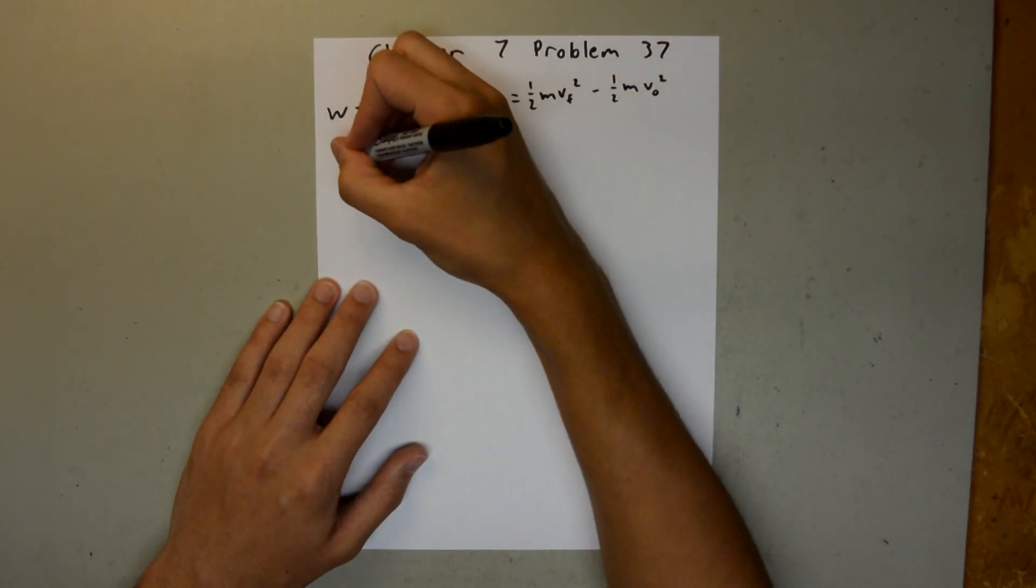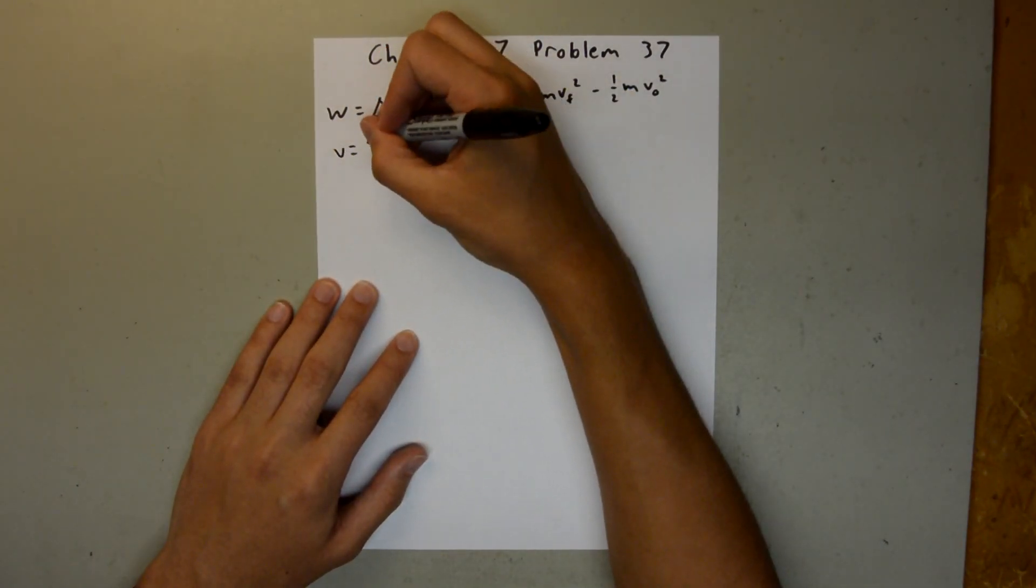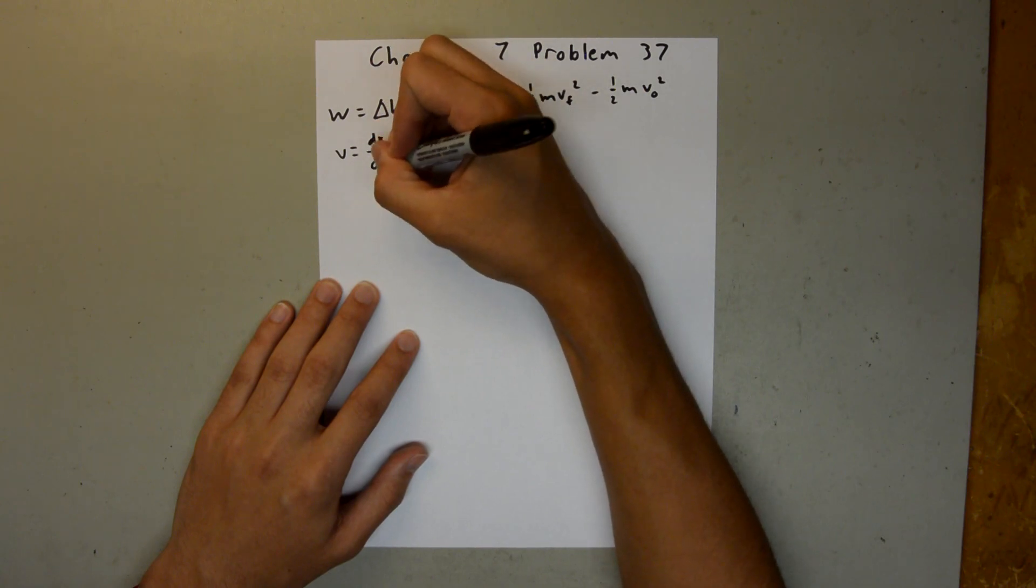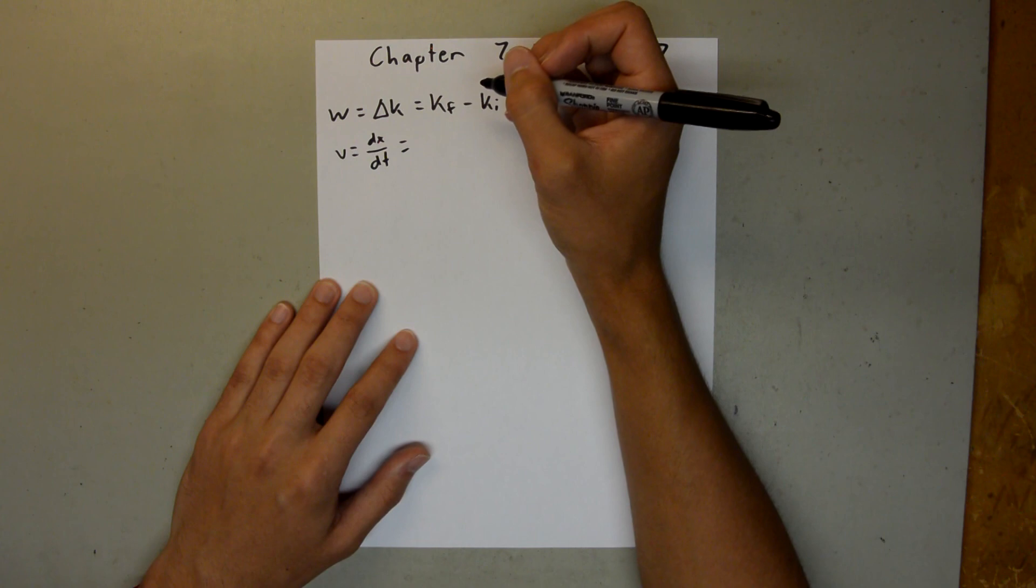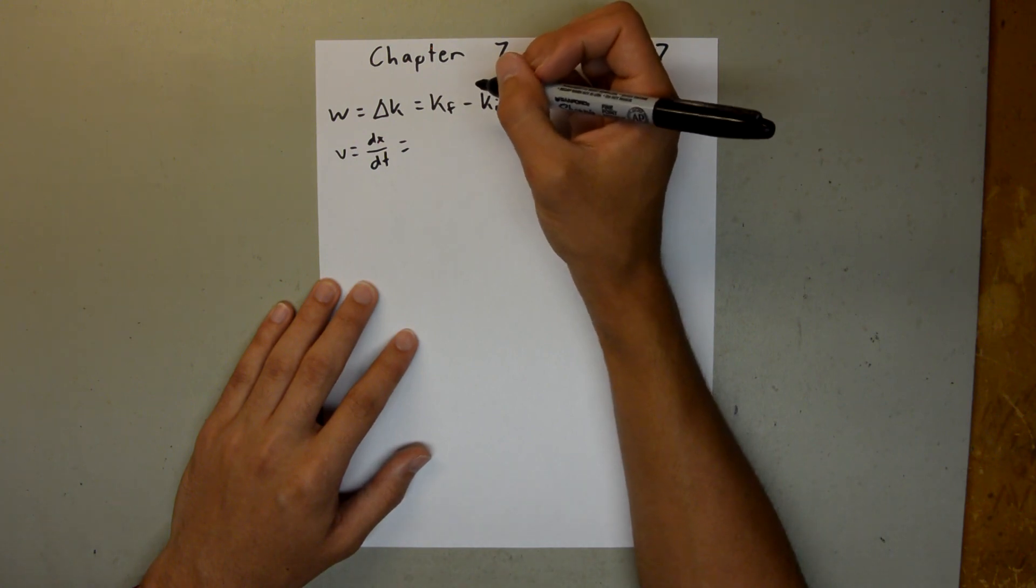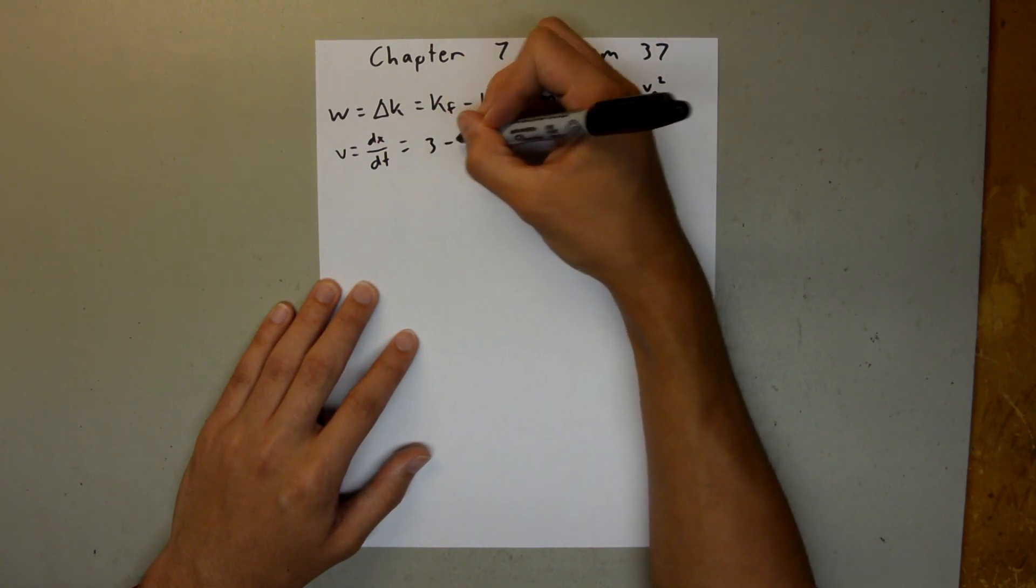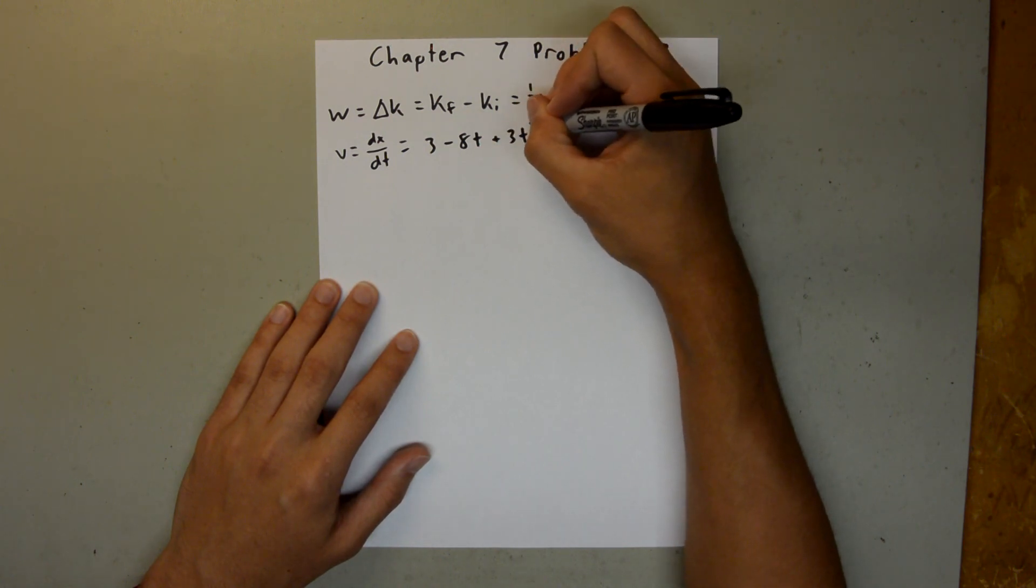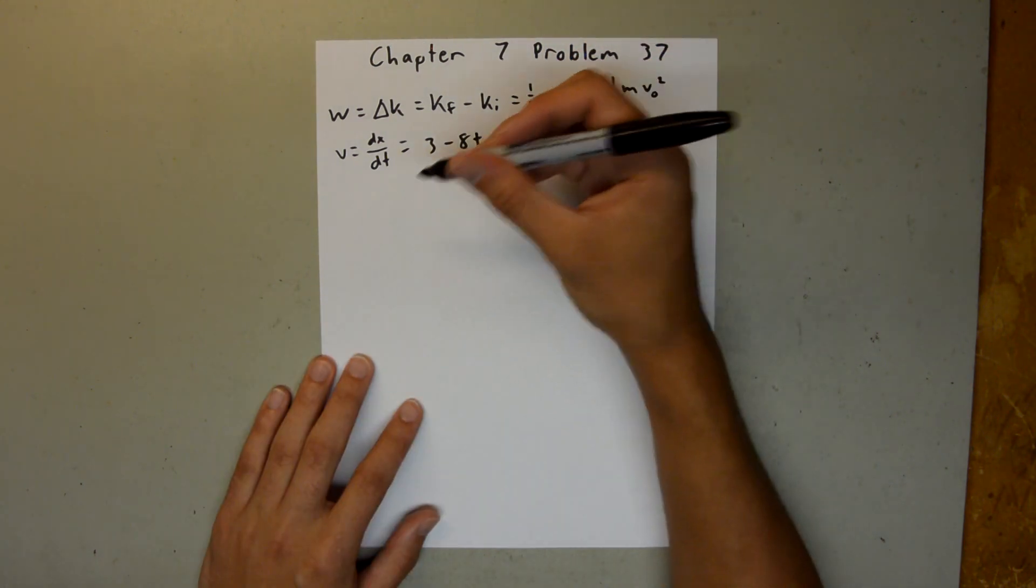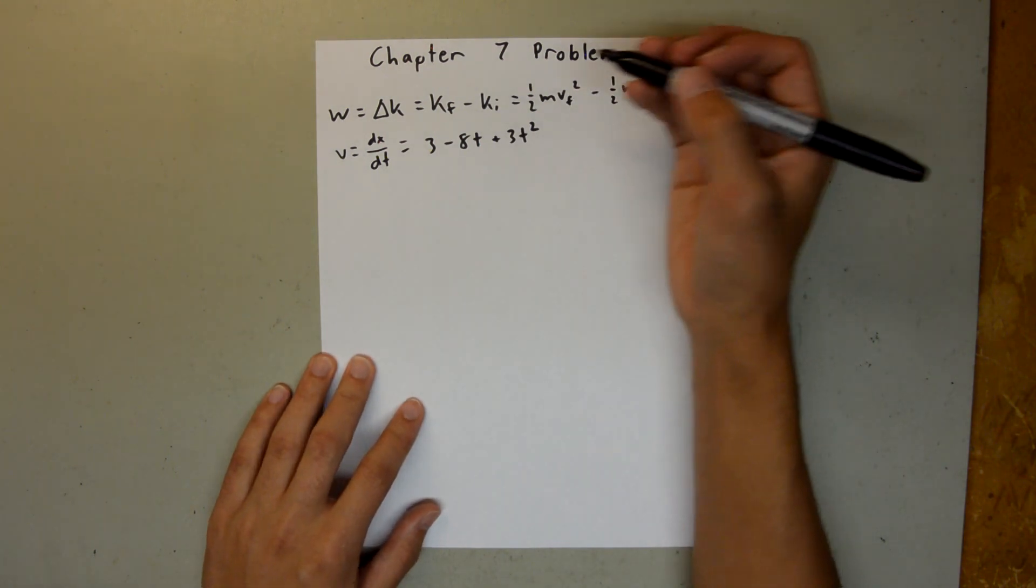And we also know that velocity is equal to the derivative of x with respect to t, so we can take the derivative of our position equation with respect to t, so that will be 3 minus 8t plus 3t squared. And we needed to do that in order to find our final and initial velocity.